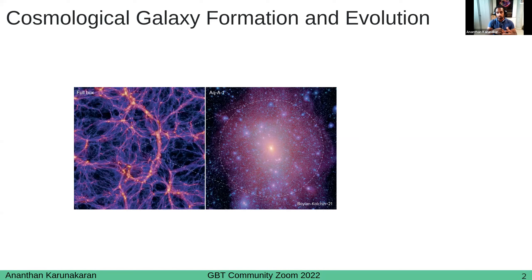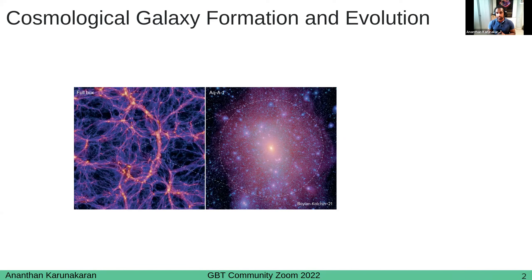If we zoom in on one of these over-densities, moving from the left to the right panel, we have this central over-density or central dark matter halo. Within it, you can see smaller over-densities — smaller specks of bright regions. These subhalos of dark matter are gravitationally bound to the central one. Within our current framework, Lambda-CDM, we believe galaxies form in a hierarchical manner: these smaller subhalos form and merge together in the early universe to form the central halo we see today. The interactions between subhalos and central halos are crucial in defining their evolutionary histories.